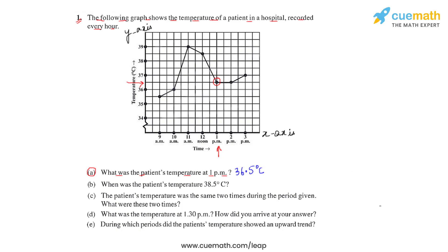Moving on to question b, we need to find the time when the patient's temperature was 38.5 degrees Celsius. Carefully observing the vertical axis, we identify the point at 38.5 degrees Celsius, trace it to the graph, and then read off the horizontal axis. The time when the patient's temperature was 38.5 degrees Celsius comes out to be 12 noon.